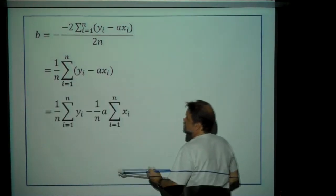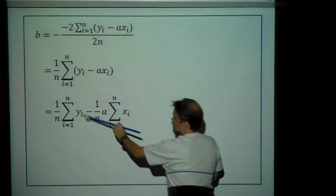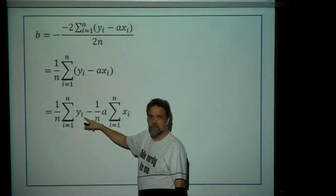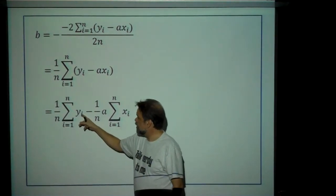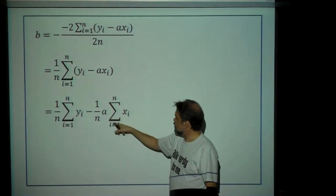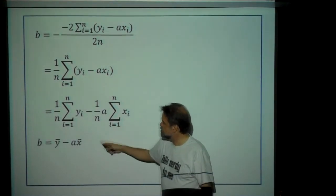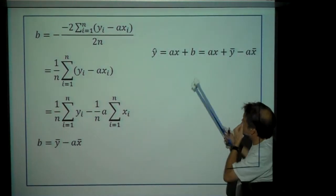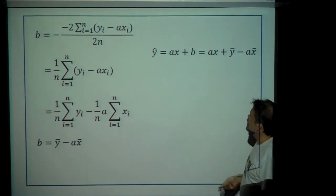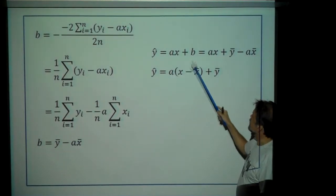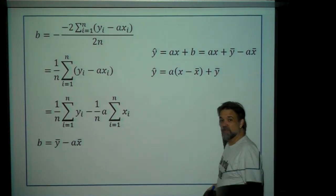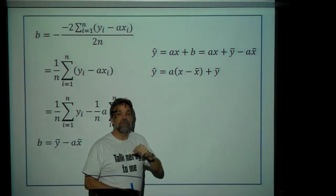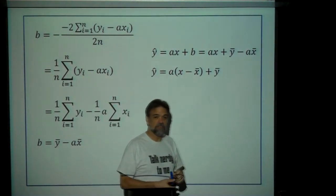So b equals negative two times this sum divided by two times n. We can factor out the negatives and the twos, and this equals one over n times the sum of y-sub-i minus a times x-sub-i. Splitting that sum: one over n times the sum of all y-sub-i, minus one over n times a times the sum of all x's. That's just the mean of y-sub-i minus a times the mean of x. So b equals y-bar minus a times x-bar. We have now proven that the least squared regression line must go through the point x-bar, y-bar. One down.